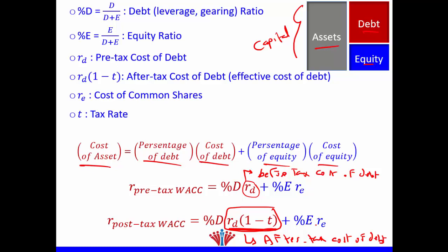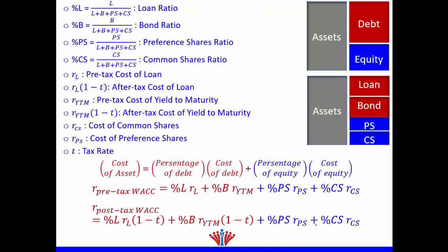Remember: taxes affect debt only; taxes do not affect equity. We know that our assets equal debt plus equity. Debt could be classified as loans and bonds. Equity could be classified as preference shares and common shares. Therefore, we can expand our cost of capital formula: percentage of debt times cost of debt — expanded twice for loans and bonds — plus percentage of equity times cost of equity, expanded twice for preference shares and common shares.